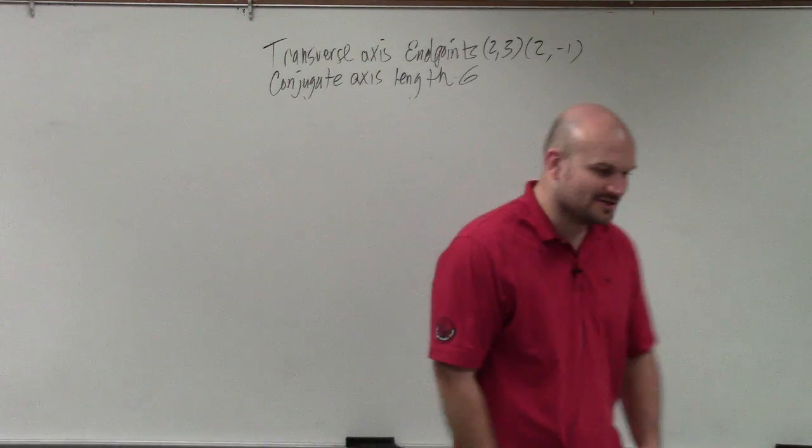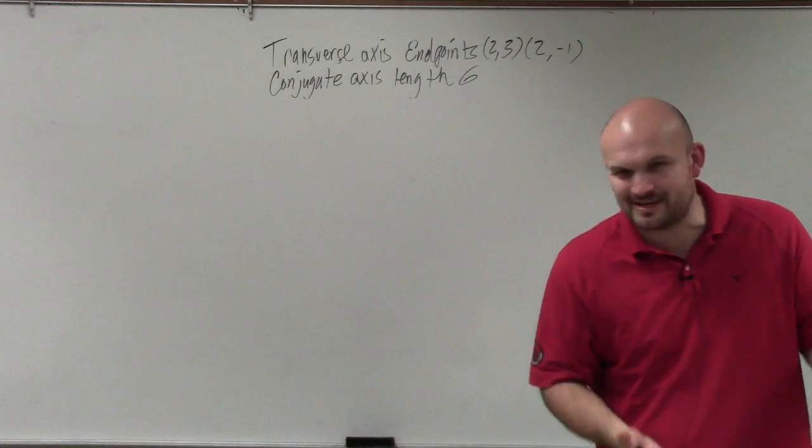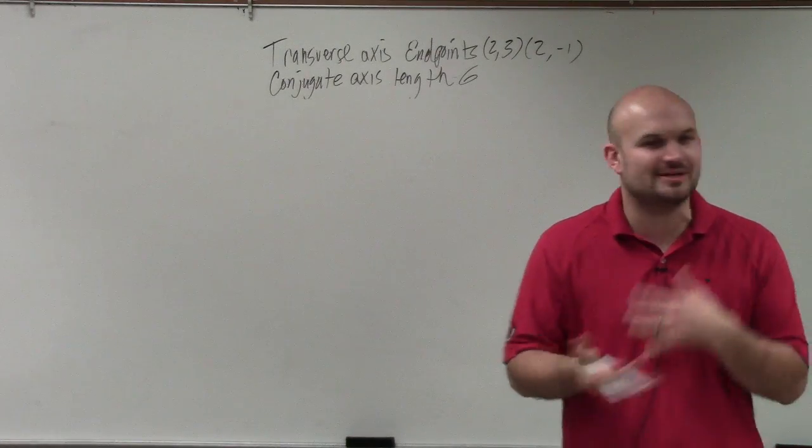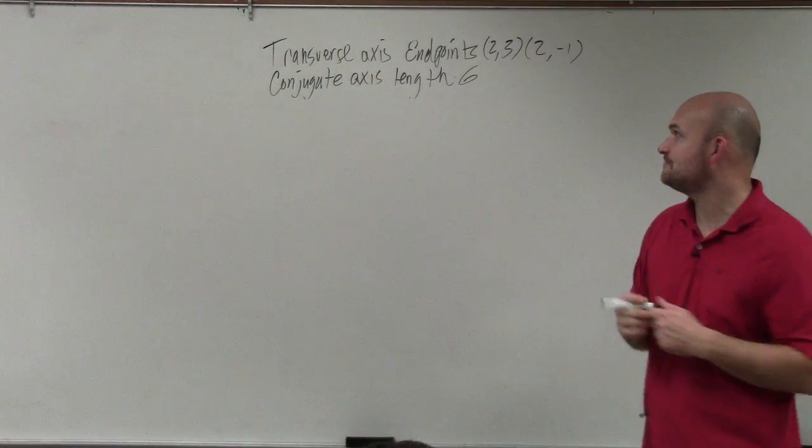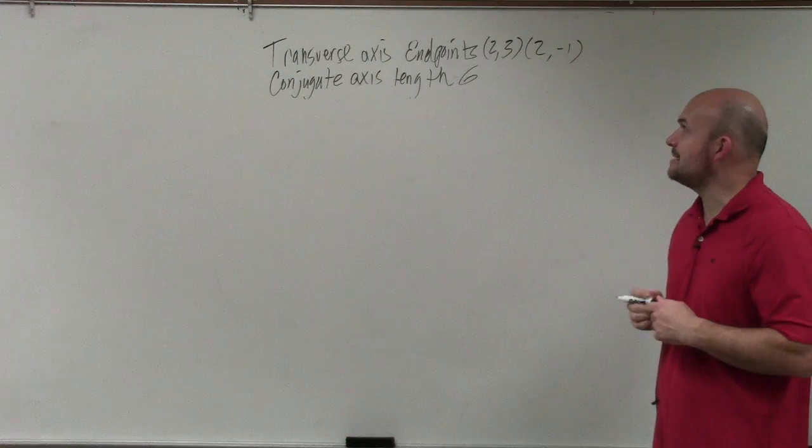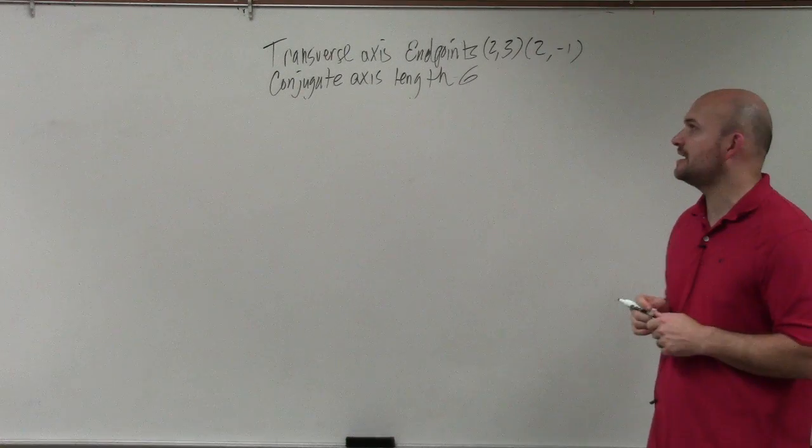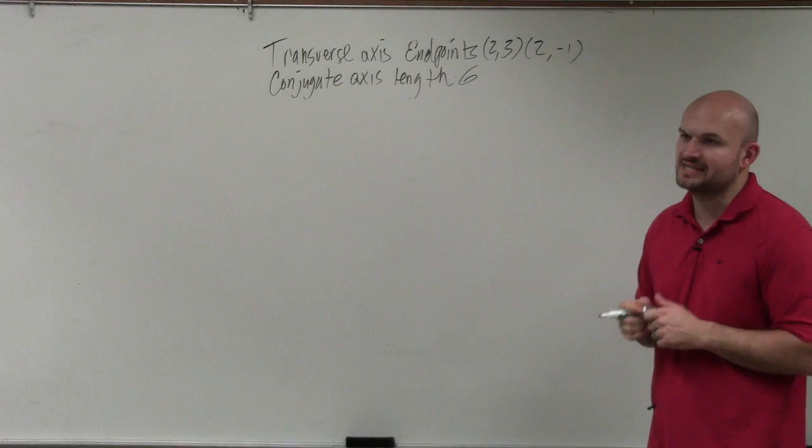So in this example, you can't do the same thing. You've got to change it up. That's the part I teach you to do. Transverse axis endpoints: 2 comma 3, 2 comma negative 1. Conjugate axis length is 6.